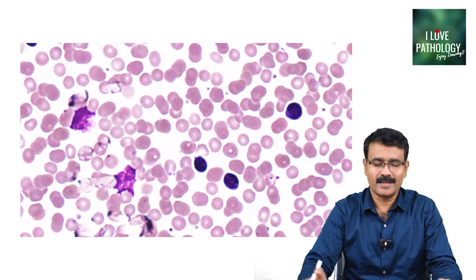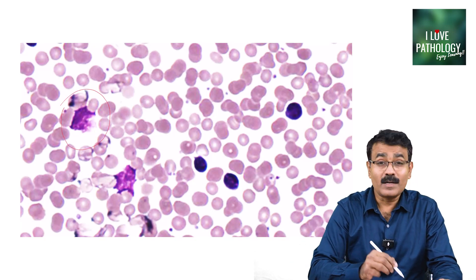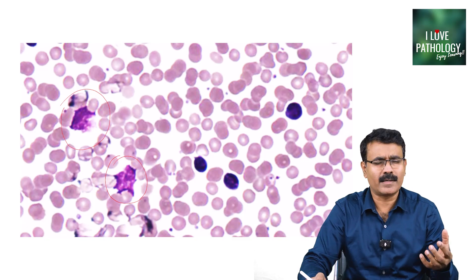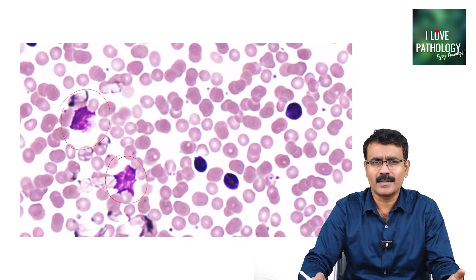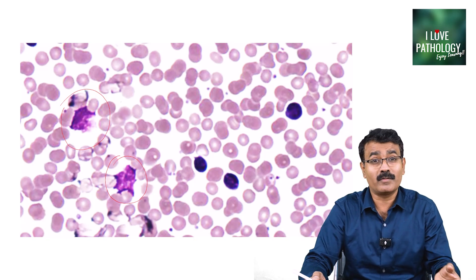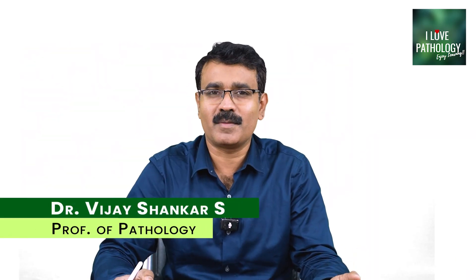What do you see in this illustration? It looks like two of these lymphocytes have been crushed, isn't it? What are these cells? These cells are smudge cells. These are one of the classical clues for one of the most common leukemias in adults — that is chronic lymphocytic leukemia. Today, we'll be learning about chronic lymphocytic leukemia.